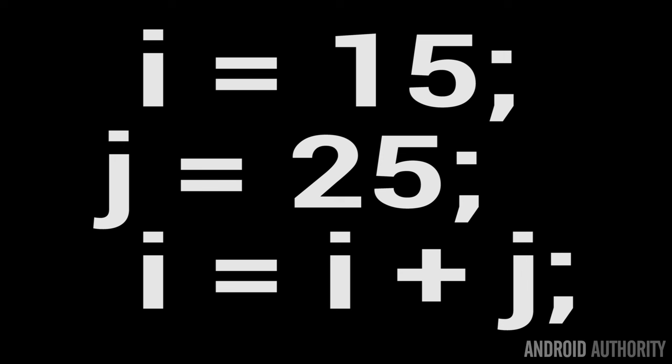Now in a higher-level language like C or Java, you would probably do this in just three lines: I equals 15, J equals 25, I equals I plus J. So as you can see, using a higher-level language is easier — just three lines of code rather than eight.